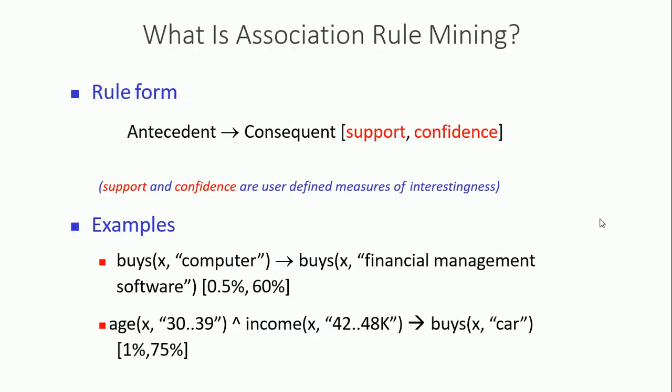What is association rule mining in rule form? A rule has two parts: an antecedent and a consequent, just like a cause-and-effect relationship. The antecedent is something like 'if you're buying milk,' and the consequent is what you buy to complement the milk — for example, bread. This relationship is quantified by support and confidence. For instance, if you're buying milk then there is a 100% chance you're buying bread — that's 100% confidence and 100% support.